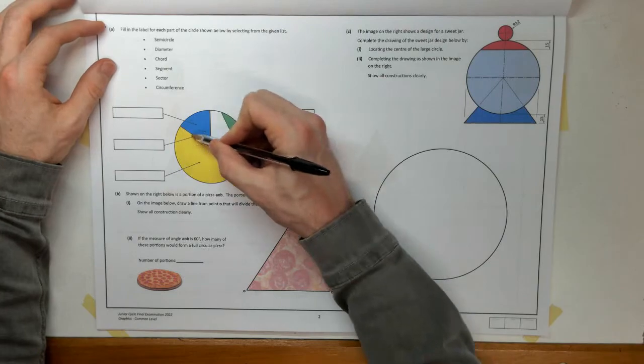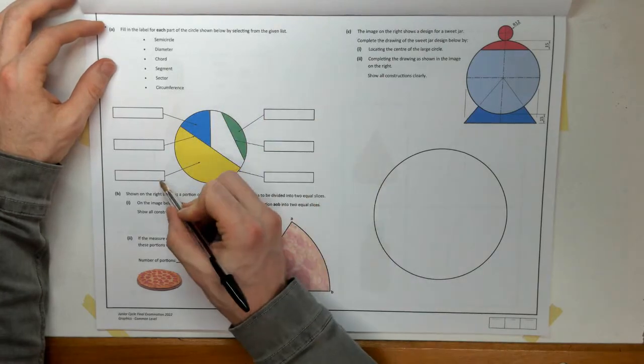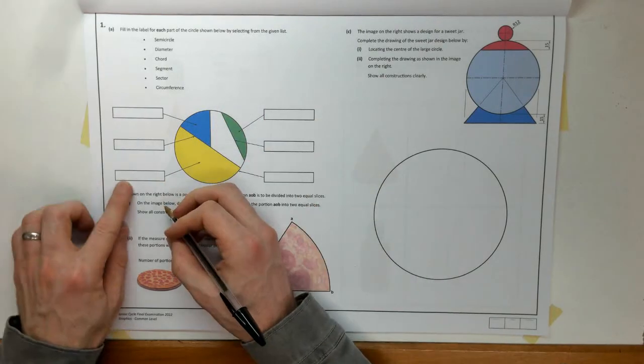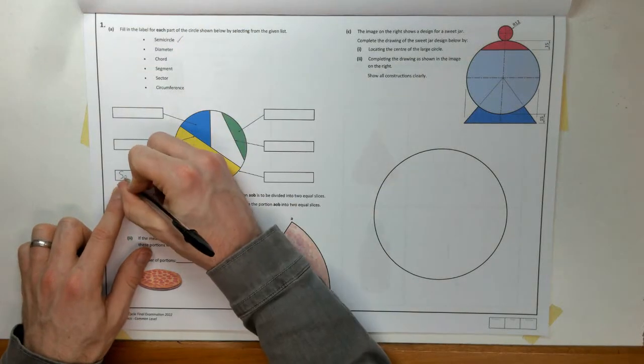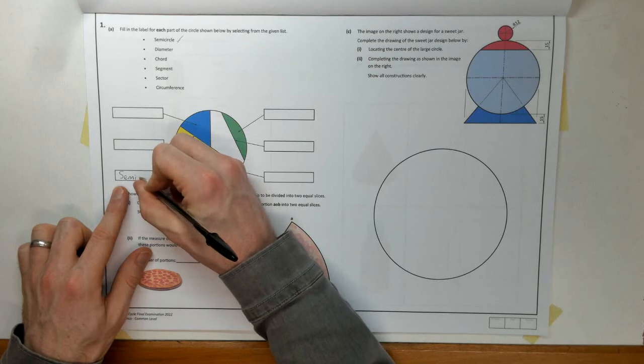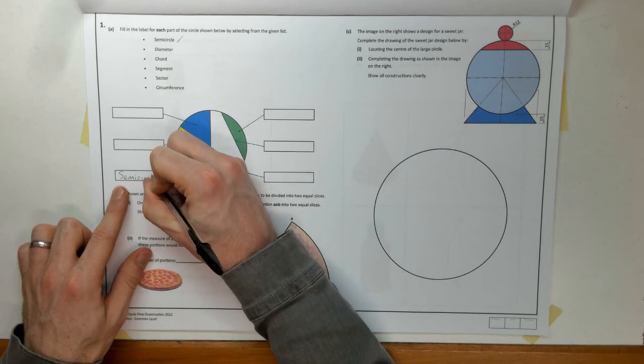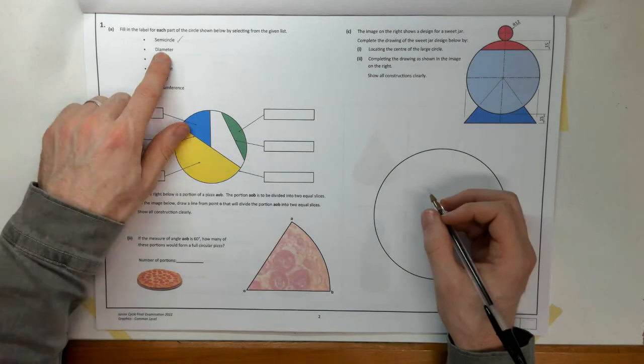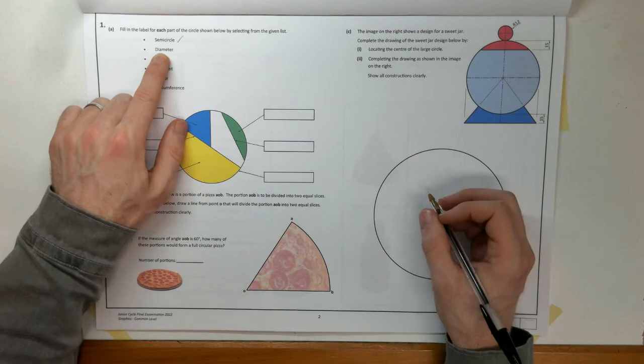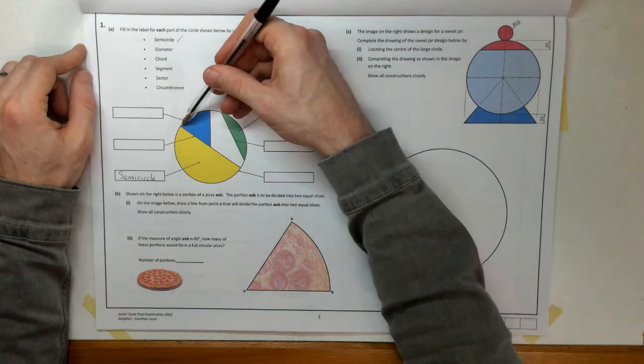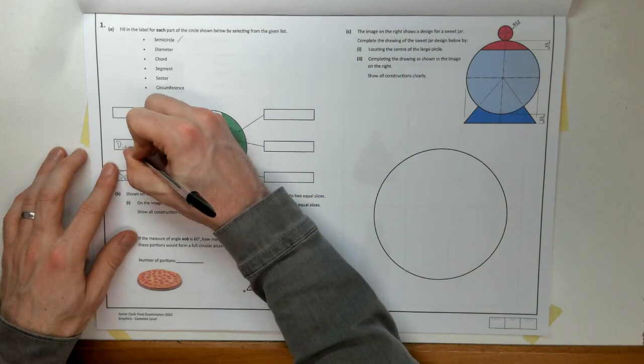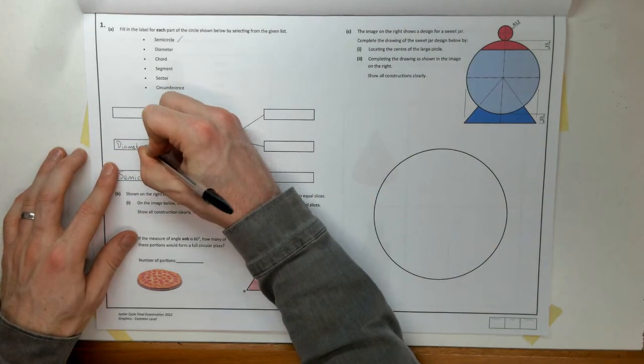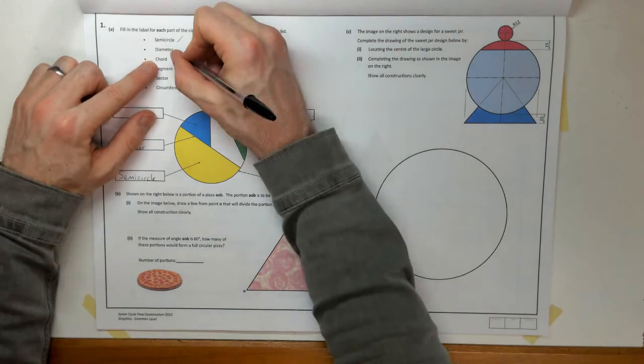We've got a circle, so this is a semi-circle and that's my arrow for that. I'll tick that off and write it in here. Semi-circle. My diameter, so here's my diameter running through the middle of my circle. I'll tick that off.